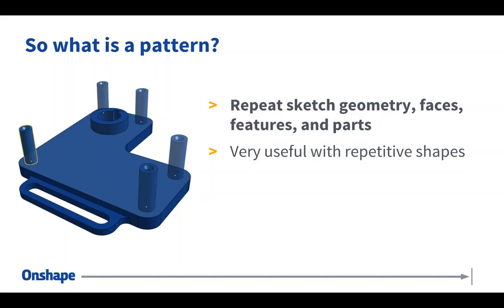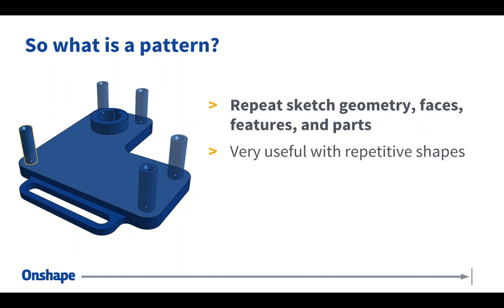Let's jump into things. The first question a new user to CAD might ask is: what is a pattern? The easiest way to explain a pattern is simply repeating geometry — repeating sketch geometry, faces, features, parts, whatever the scenario may be. You can pattern all these things with Onshape. A simple way of explaining a pattern is repeating geometry based on maybe a linear distance between pattern instances, a circular distance, or even some custom options.